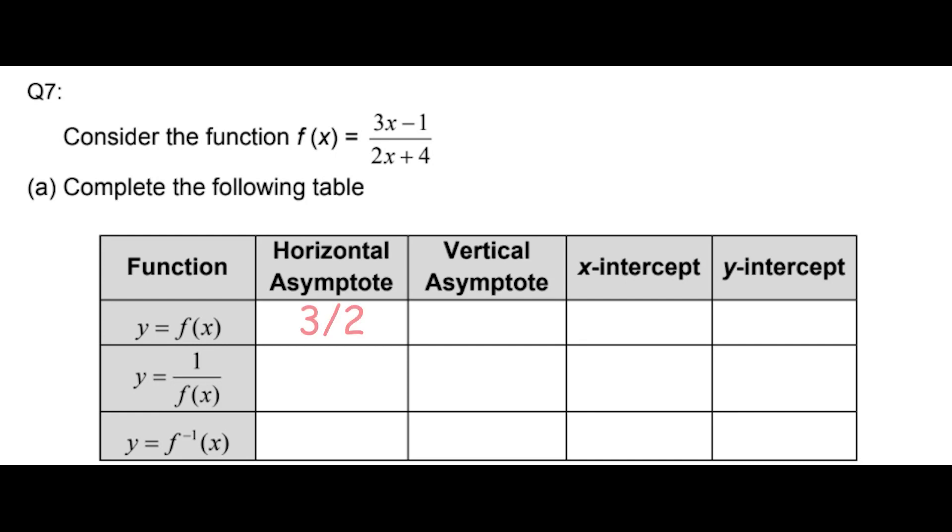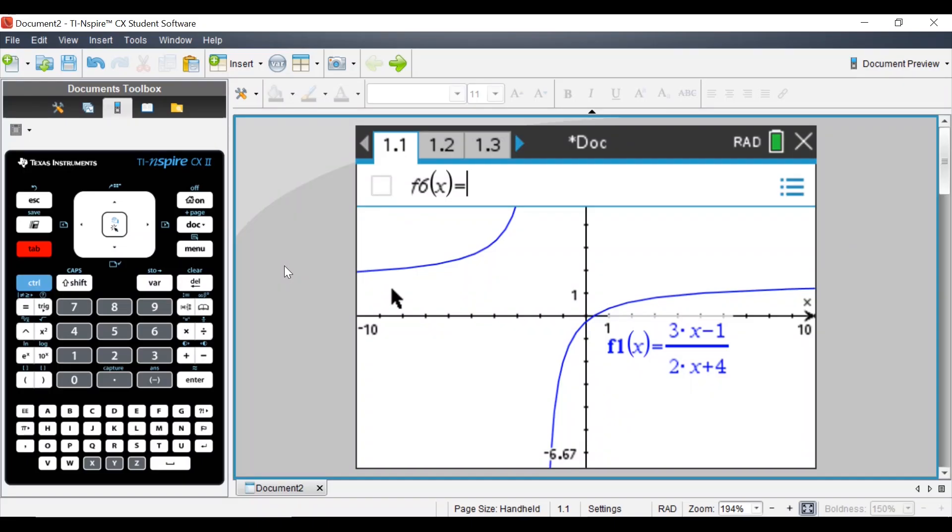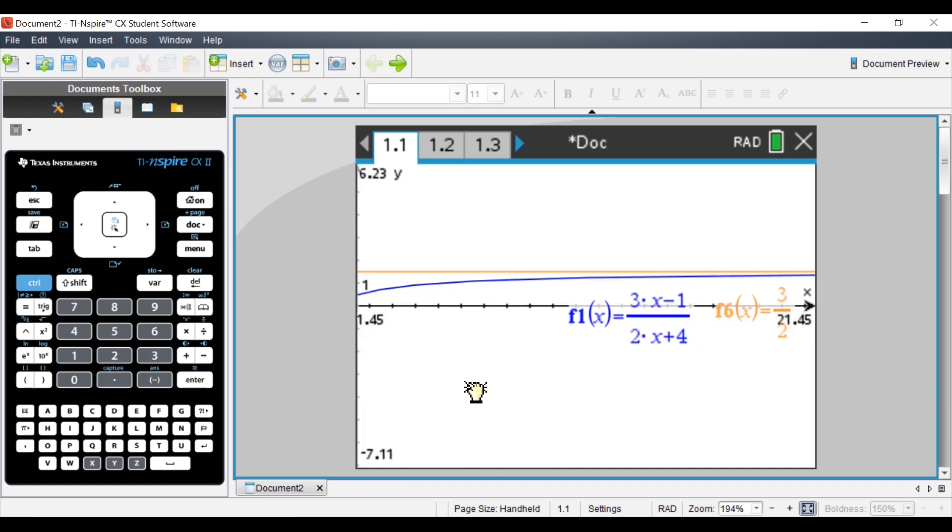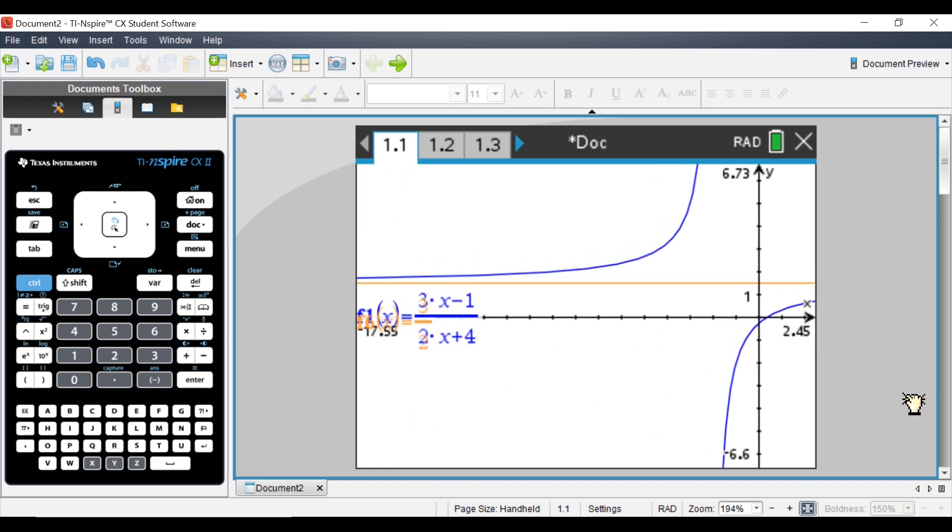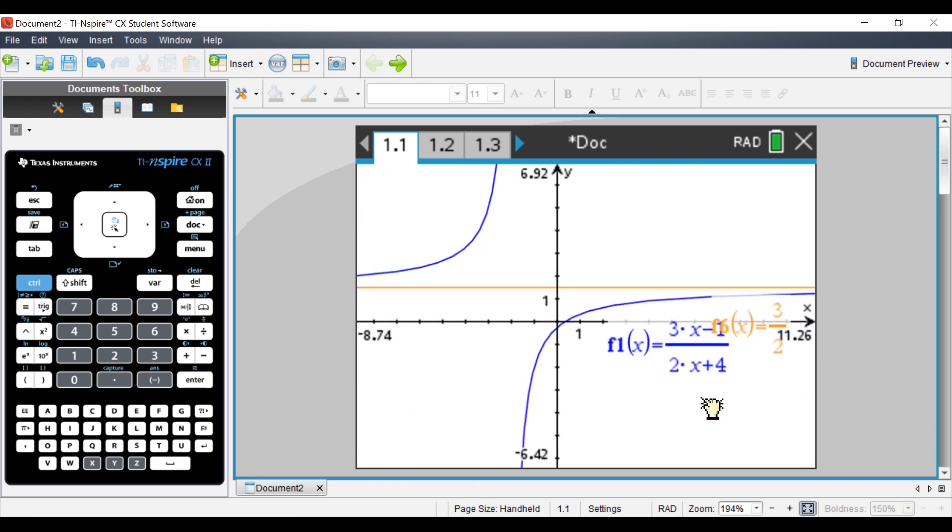We can even verify this by inserting a line y = 3/2. Now we can clearly see how no point on the graph intersects this line, as this is the asymptote. As we move rightwards or leftwards, the graph approaches this asymptote y = 3/2, but it will never touch it.